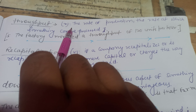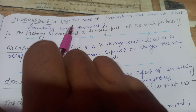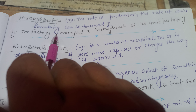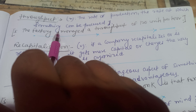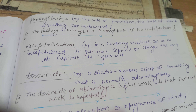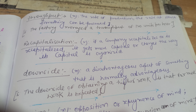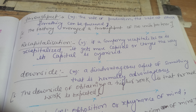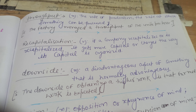Throughput is a noun meaning the rate of production, or the rate at which something can be processed. This word shows the rate by which we can do production. The sentence for this word is: the factory managed a throughput of 120 units per hour.